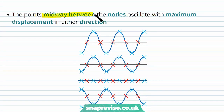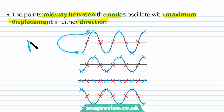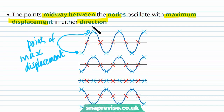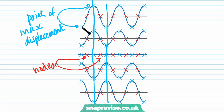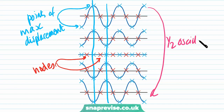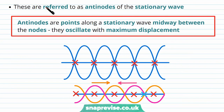The points midway between the nodes oscillate with maximum displacement in either direction. These points of maximum displacement occur here and here, midway between the nodes — they can be at maximum positive or maximum negative displacement. Over time we've gone from maximum positive to maximum negative displacement, corresponding to half an oscillation of our stationary wave. These points are referred to as antinodes of the stationary wave.